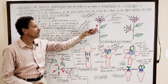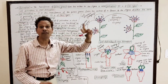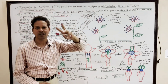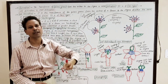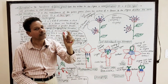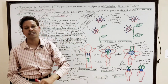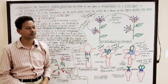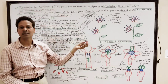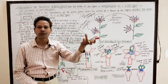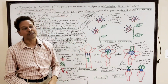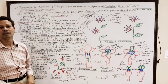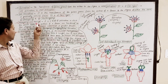Autogamy means self-marriage. It occurs in a perfect, bisexual, or intersexual flower having both sex organs — and both sex organs mature simultaneously.